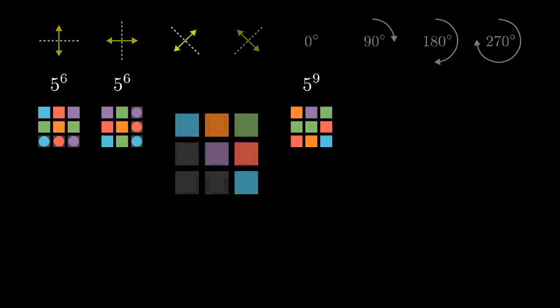Pictures symmetrical along the main diagonal are fully determined by these 6 squares. Again, the remaining squares are forced by the symmetry, so the number of symmetrical pictures is 5 to the power of 6.